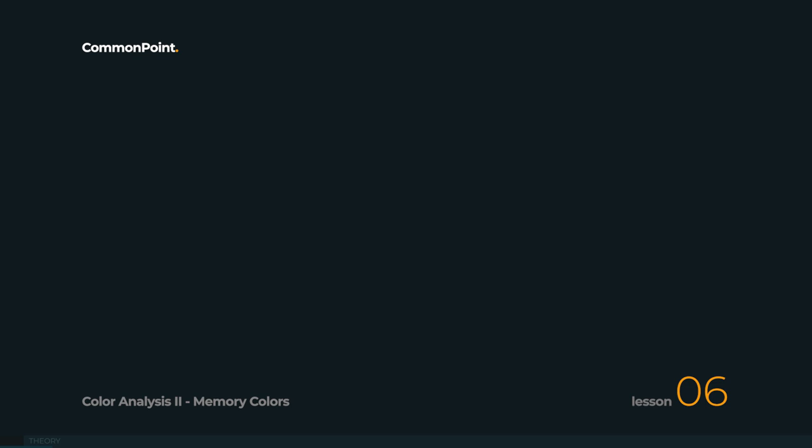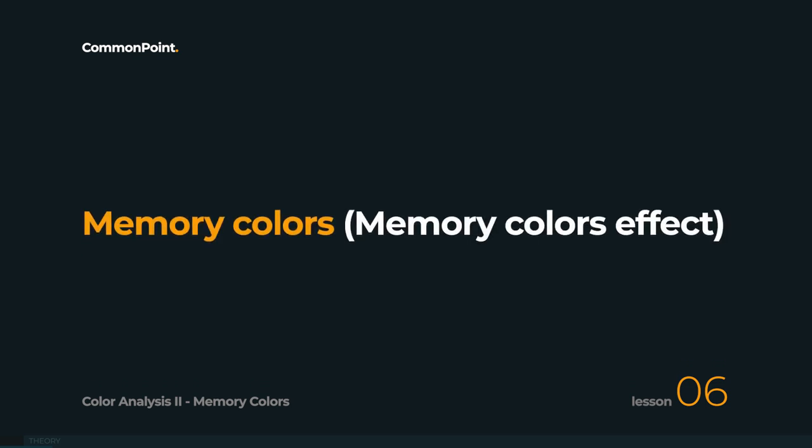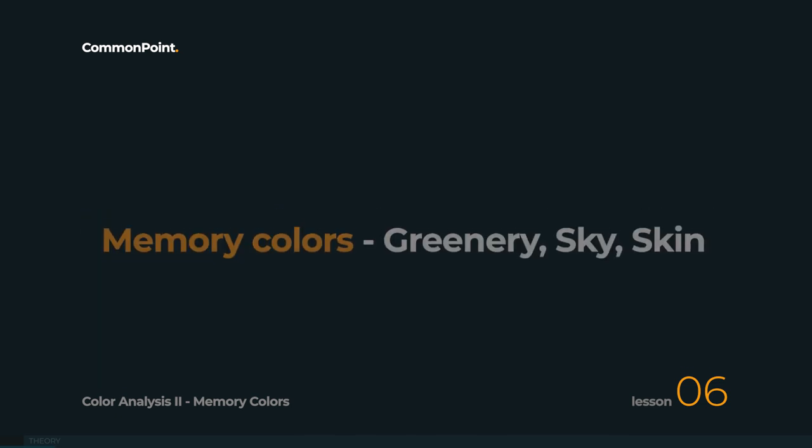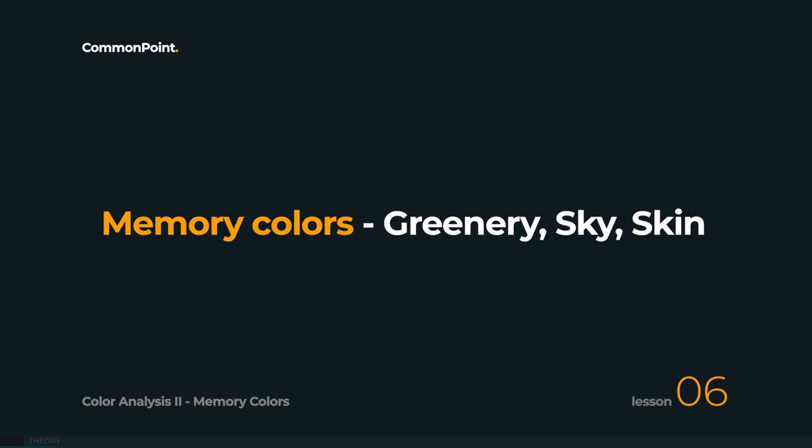For our purposes, it will be green and sky. From now on, we will call them memory colors. There is another very important memory color, and that is the skin color. Greenery, sky, and skin form the trio that you need to pay the most attention to if you work with color. In our course, we do not focus on people, so we will not be analyzing skin. However, the principles we will start talking about in a moment will also apply to the skin.